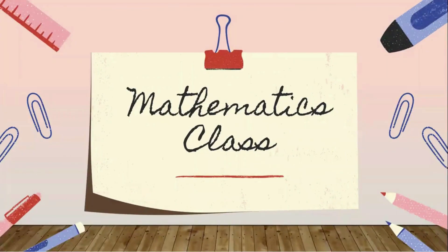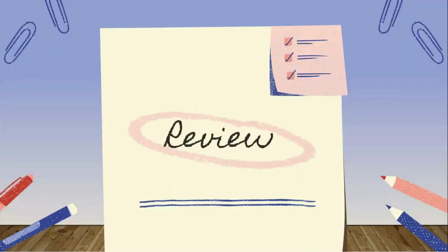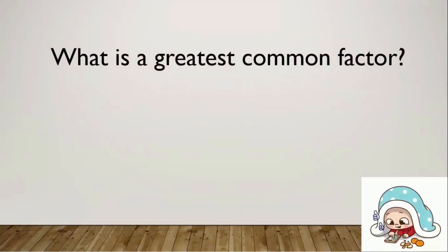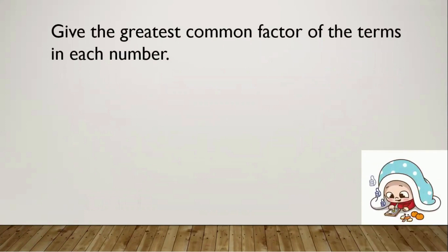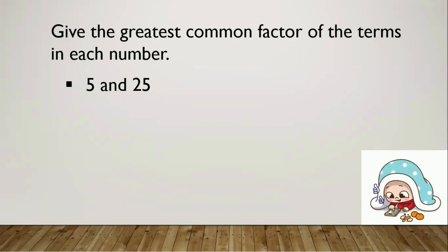Hi, good day everyone and welcome to our mathematics class. Before we start our lesson, let's first review the greatest common factor. When we say greatest common factor, it is the greatest number that is a factor of two or more terms. Let's try a drill — give the GCF of the terms given. The first one is 5 and 25. Can you think of a number that you can divide both 5 and 25? Yes, that is 5.